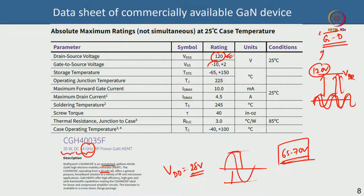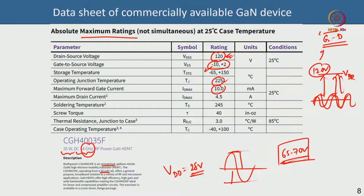The gate-to-source bias maximum is +2 V — beyond that the gate-drain diode turns on — and the minimum is -10 V. The operating temperature range is -65 to 150°C, and the maximum operating junction temperature is 225°C. The maximum forward gate leakage is 10 mA, and the maximum drain current is 4.5 A. These are maximum ratings measured separately, not simultaneously.